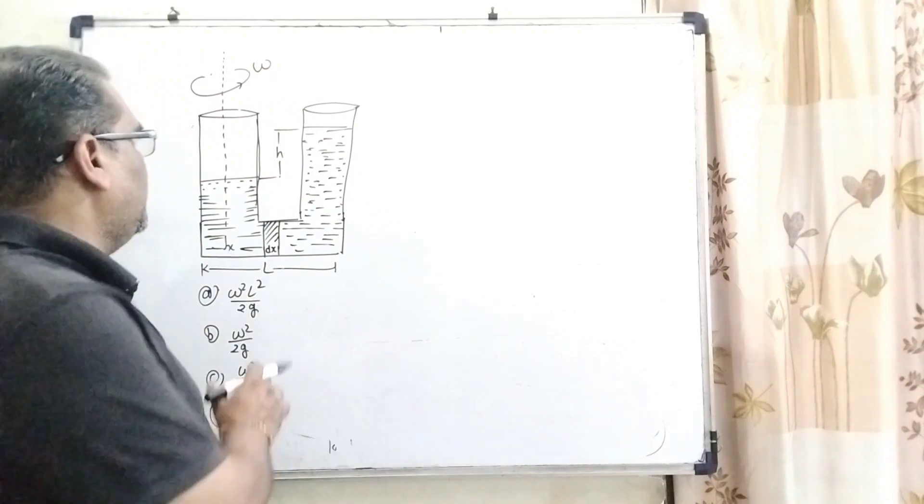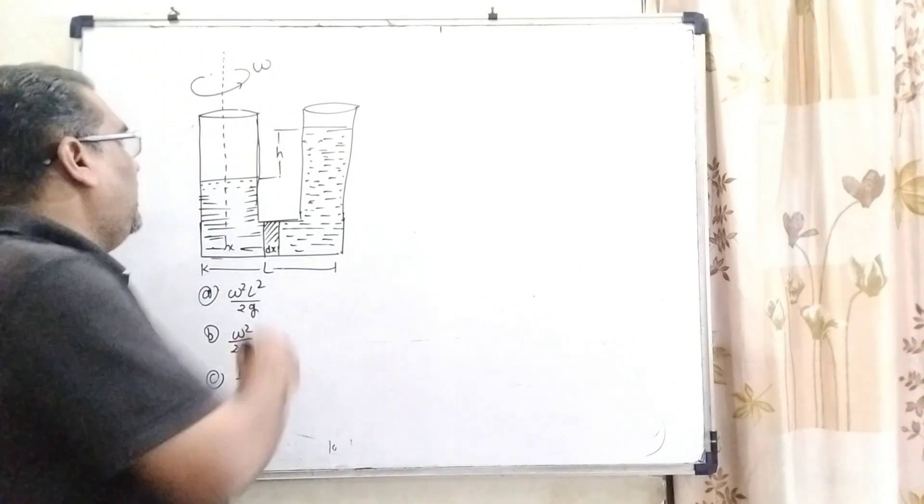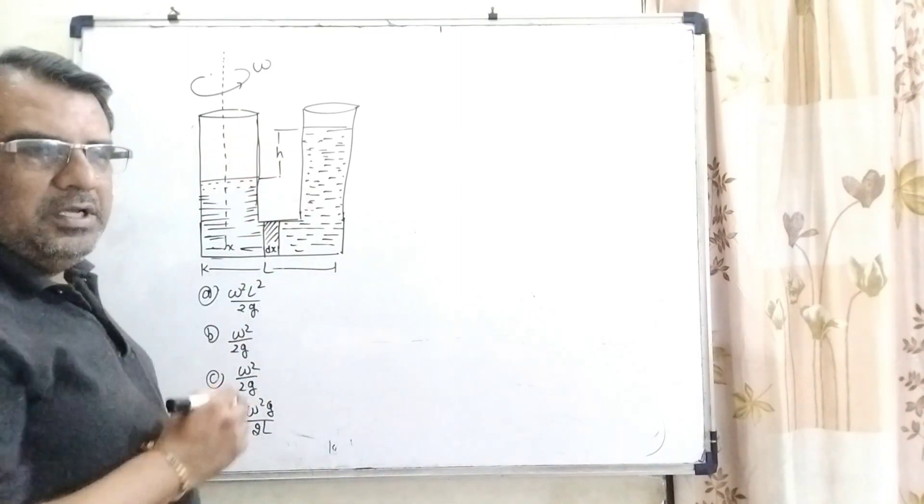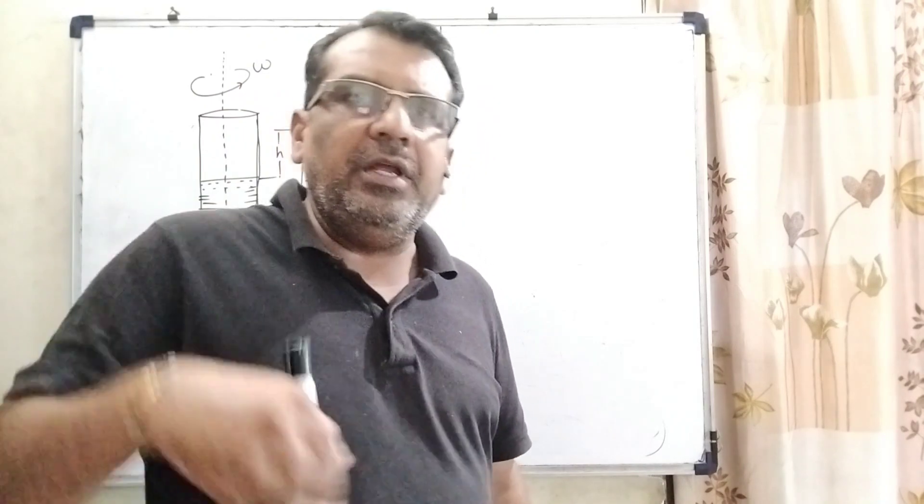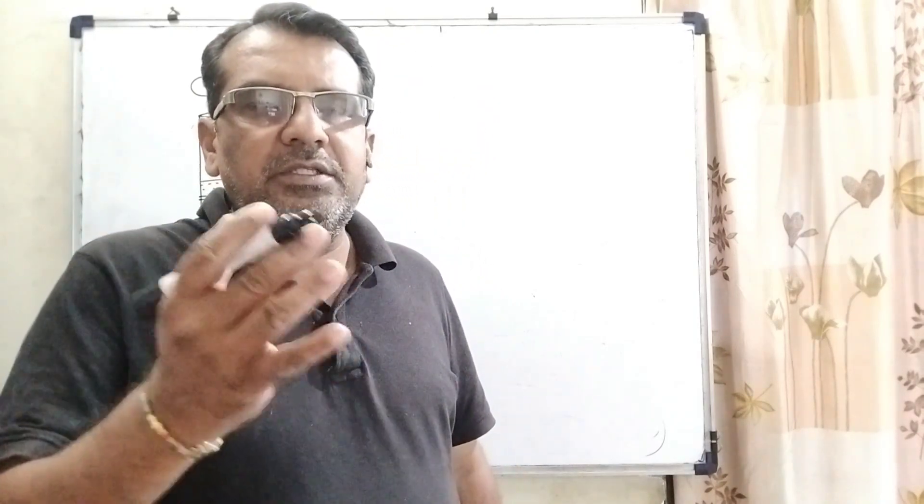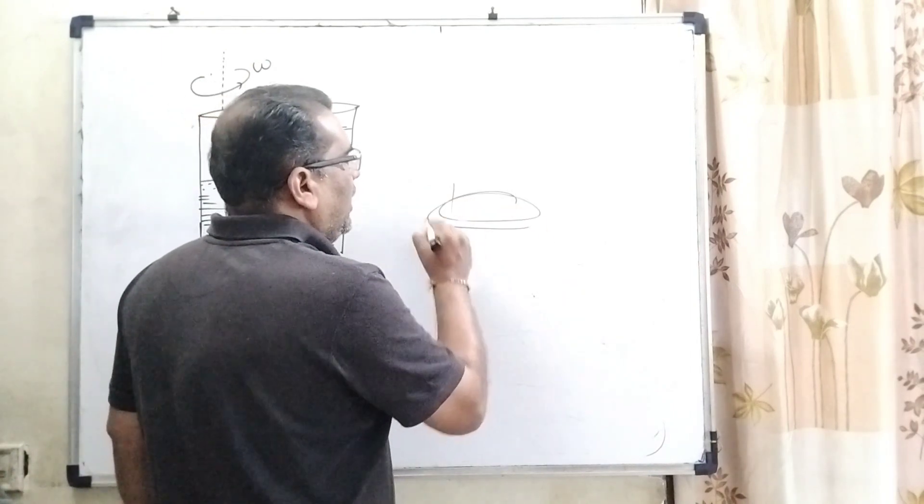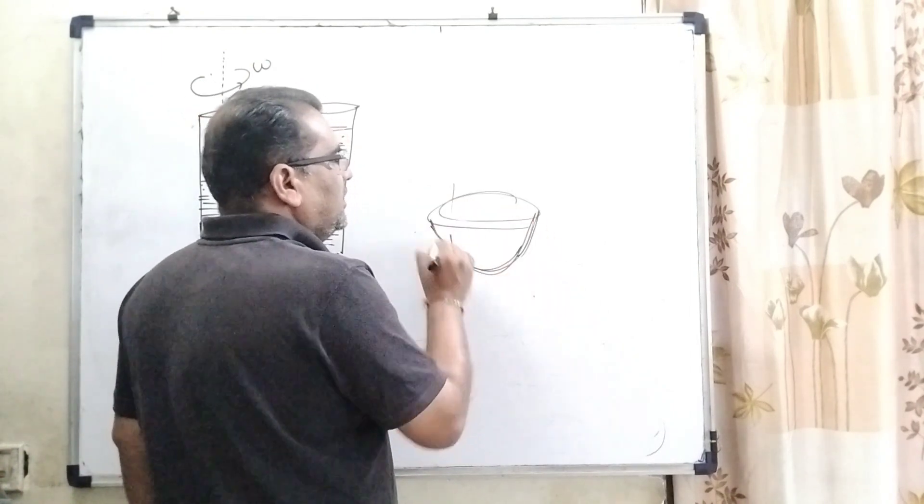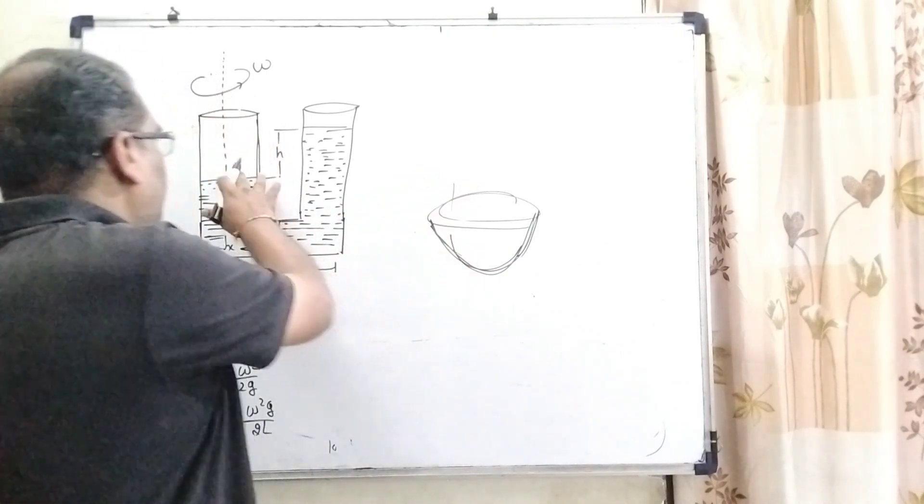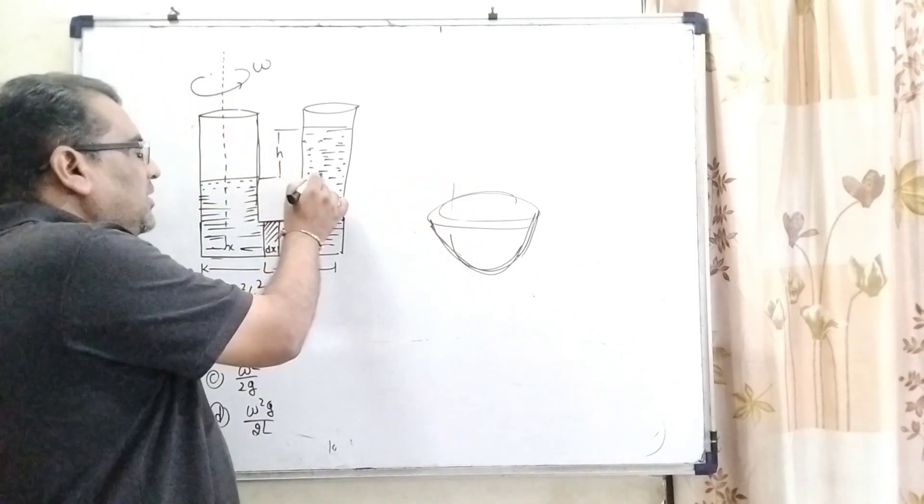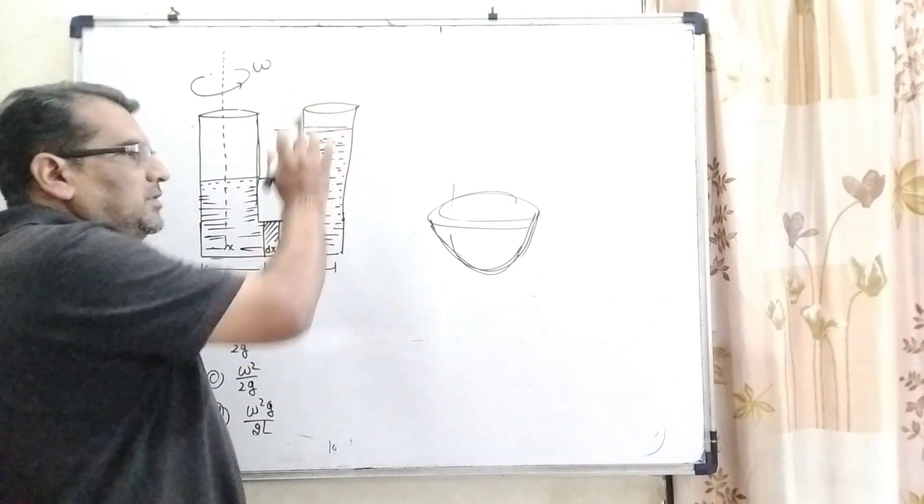So here in this question, we have given this U-tube and the length of the base is L. And this is rotating about one arm like this. As you know, when any liquid is rotating, some pressure is applied. The lower part decreases and this part increases. Therefore, the excess pressure is applied on this liquid, and because of this, the liquid in the second arm rises.